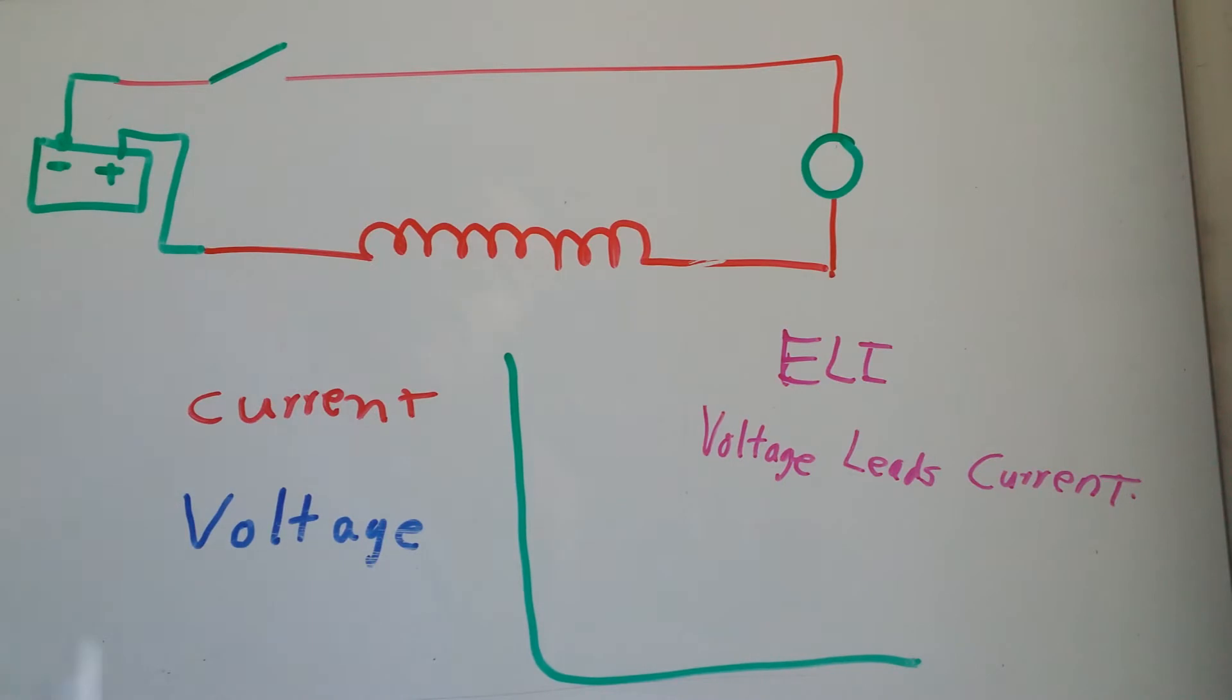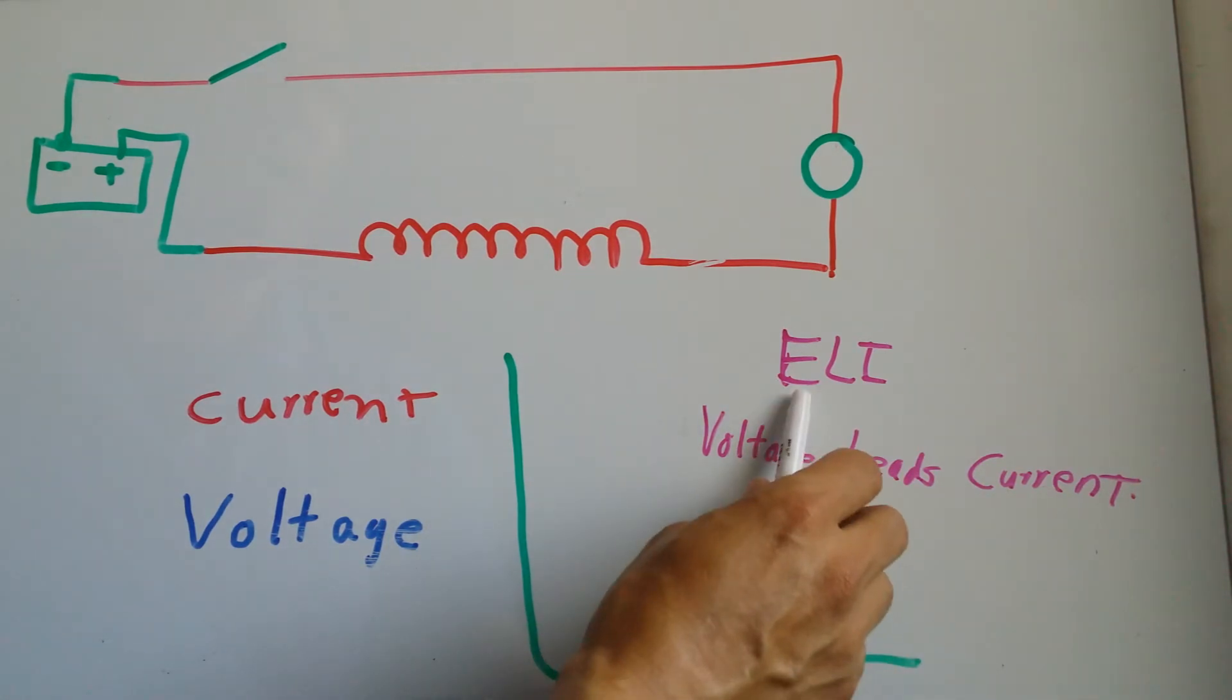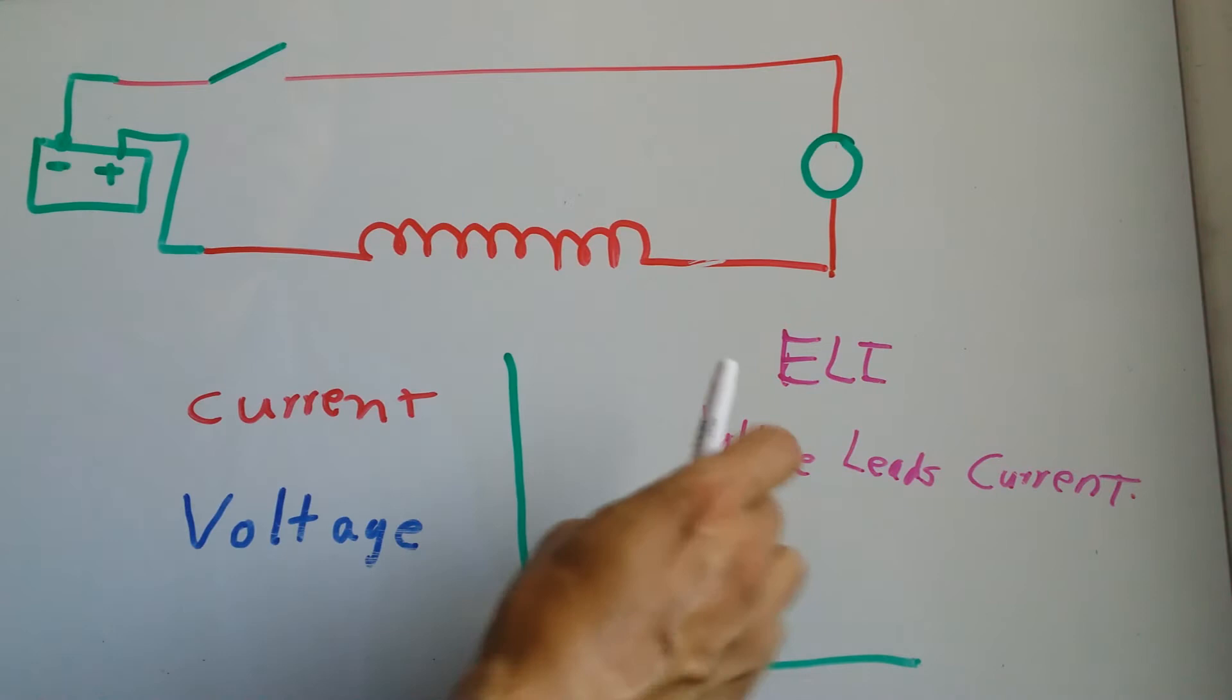When talking about inductors, people will say that voltage leads current. They have these acronyms where E stands for voltage, I for current, and L for inductor, and also for leads. So to easily remember, they just say ELI.